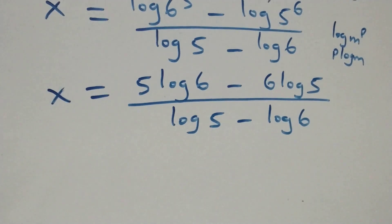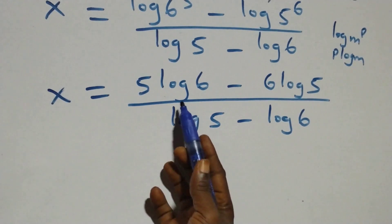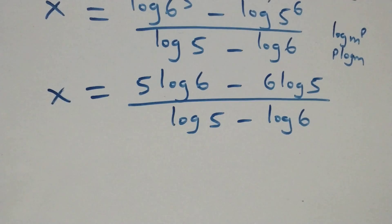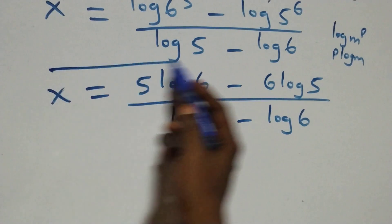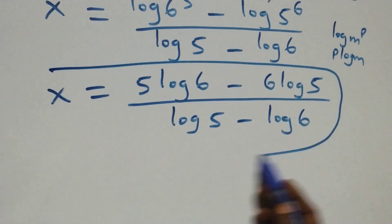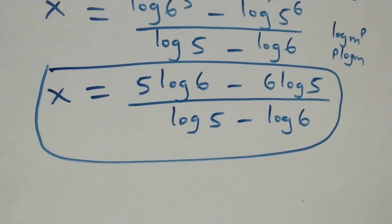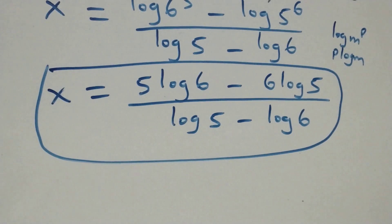We can substitute the values of log 6 and log 5 and evaluate to get our answer in decimal, or we can decide to leave it in this form. Therefore the value of x in this problem is: x equals 5 log 6 minus 6 log 5, all over log 5 minus log 6.